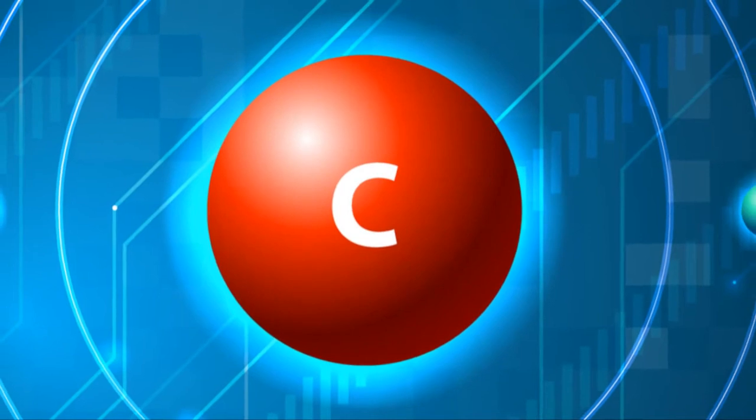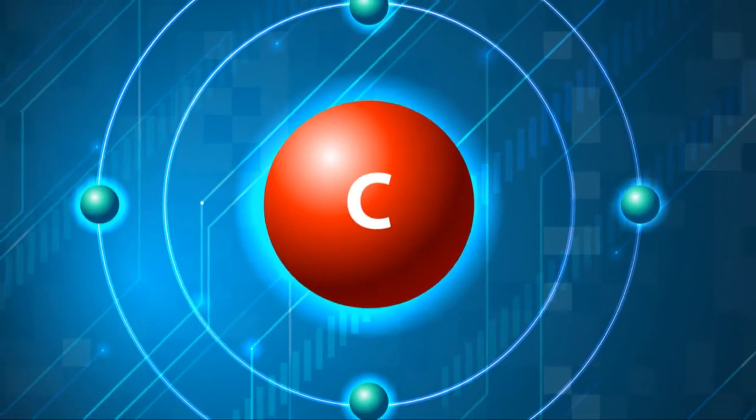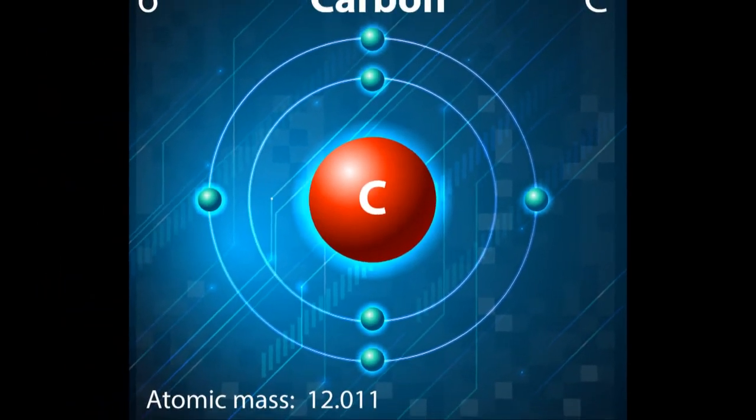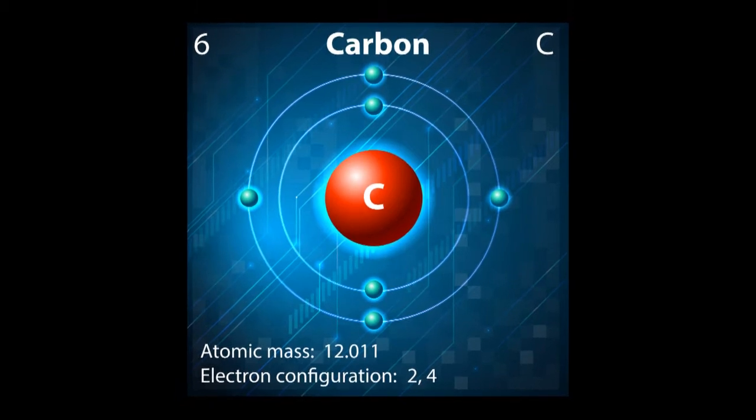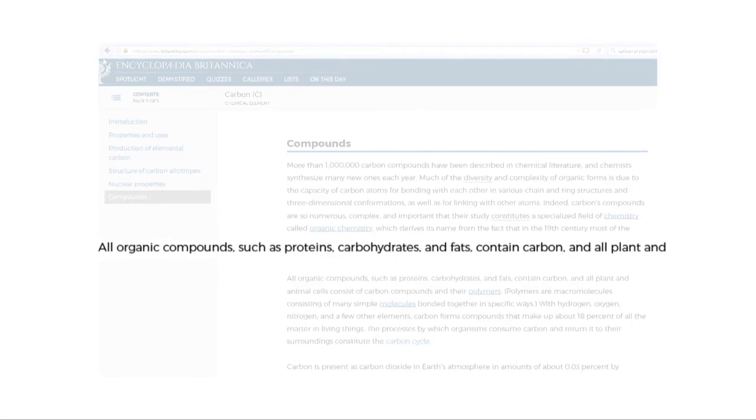The fine structure constant also plays a key role, especially in the prevalence of carbon. The value of the fine structure constant is optimal for the formation of carbon in extremely large volumes. If it was just half a percent higher or lower, the production of carbon would be around 99% lower. The elements of life, carbons are the basic building blocks of protein, would then not be available in the cosmos in sufficient quantity to support living beings.